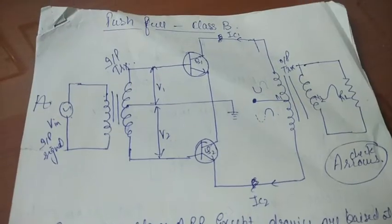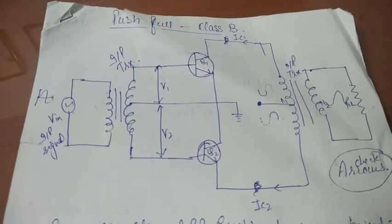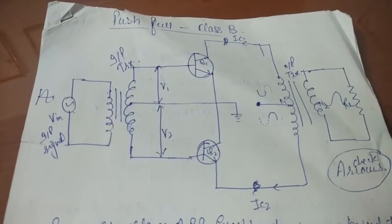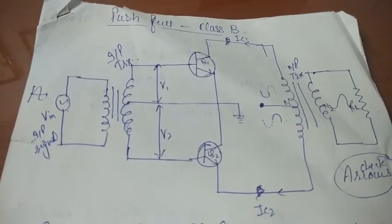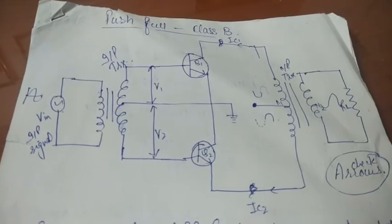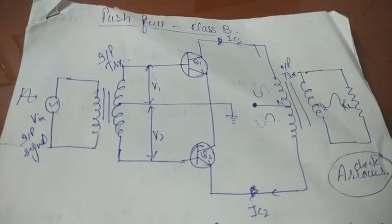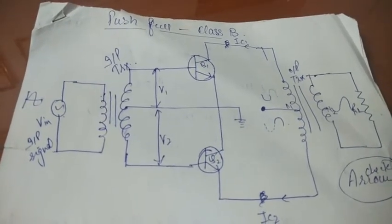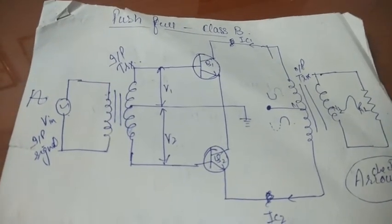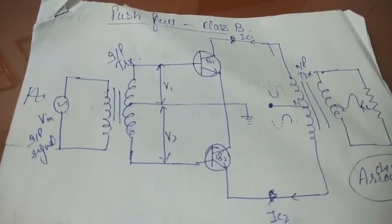First of all we see the diagram. It only seems to be difficult but it is so easy — it's not difficult. First of all we have to draw the input VIN and then the input transformer. The transformer is to be considered on both sides: the input side and the output side. Then two transistors are situated, that is Q1 and Q2.